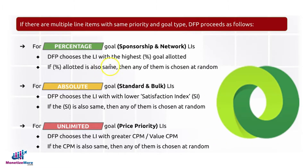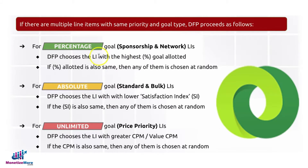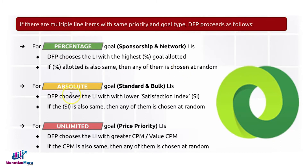The reason for that is because network is percentage-based. Percentage-based line item types are sponsorship and network. DFP will choose the line item with the highest percent goal allotted. If both of them exist and compete in exactly the same inventory and have the same priority number, the one with the highest percentage goal allotted will be chosen. If they both have the same percent allotted, then any of them will be chosen at random.